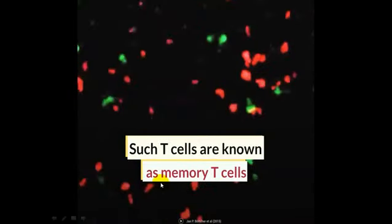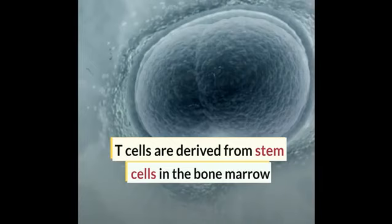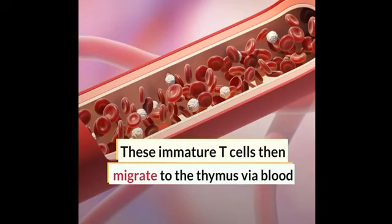T cells mature in the thymus. Where are T cells produced? T cells are mainly produced in the bone marrow, where there are stem cells from which T cells are derived. In this initial condition, T cells are completely immature, meaning they cannot perform their function of destroying pathogens, viruses, or bacteria.